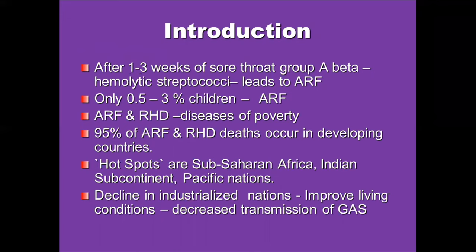Only 0.5 to 3% of children develop acute rheumatic fever, and it is a disease of poverty. About 95% of ARF and rheumatic heart disease patient deaths occur in developing countries. The hotspots are Sub-Saharan Africa, the Indian subcontinent, and the Pacific nations. There is a decline in incidence in industrialized countries due to improved living conditions and decreased transmission of group A beta-hemolytic streptococci.